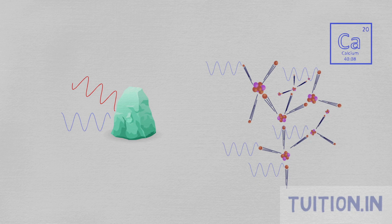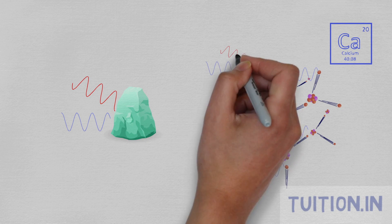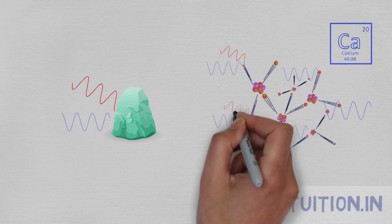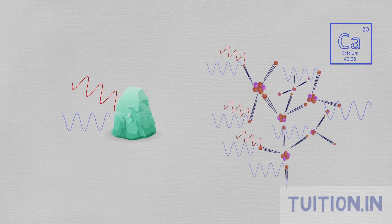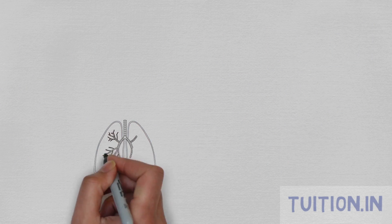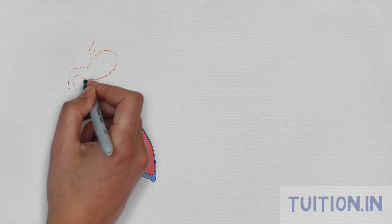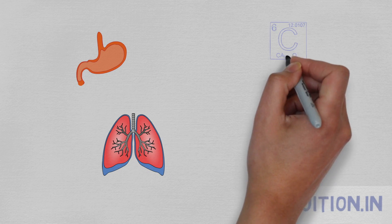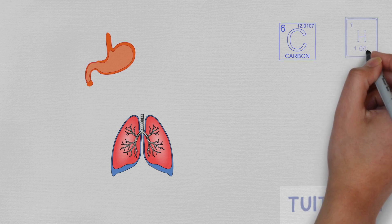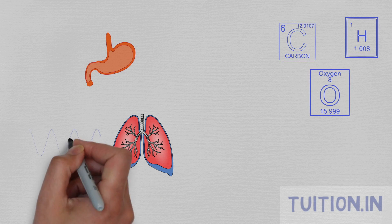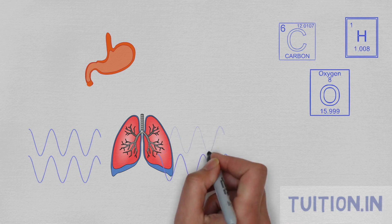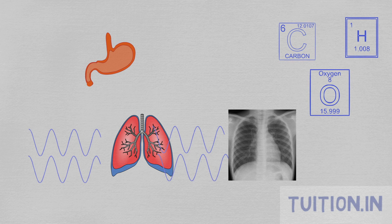Bones are full of calcium, which has a relatively higher atomic number, so they absorb X-rays pretty well. Soft tissues, on the other hand, aren't as dense and contain mostly lower atomic number elements like carbon, hydrogen, and oxygen. So more of the X-rays penetrate through tissues like lungs and muscles and darken the film.